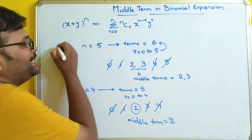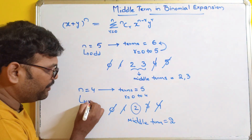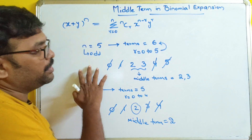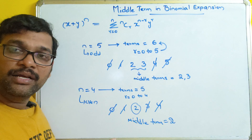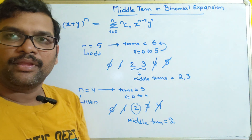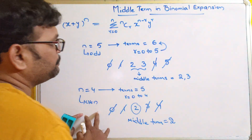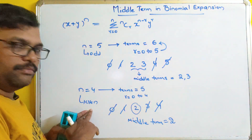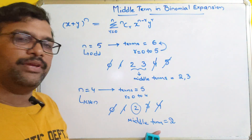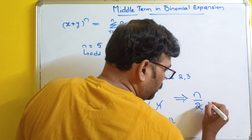If n is odd, the number of terms will be even — because r starts from zero, the total number of terms is even, so there will be two middle terms. If n is even, we will have only a single middle term. What is that single middle term when n is even? It will be the (n/2 + 1)th term.